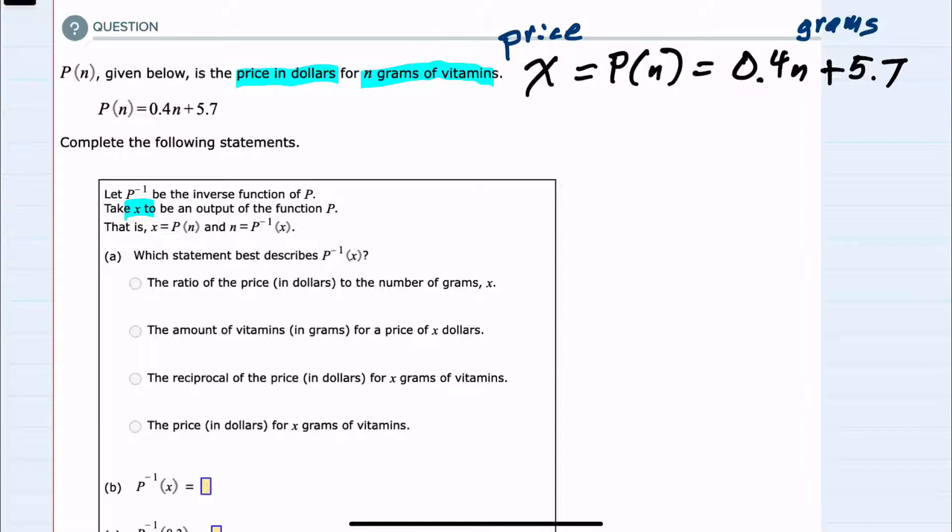This doesn't have anything to do with a ratio or reciprocal of price. The inverse function will give us the number of grams for a certain price. So the second option is the one we'll choose.